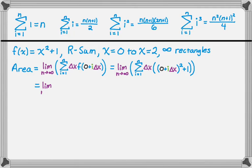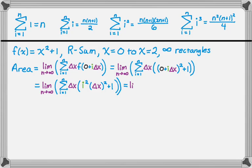Next step, I'm just going to expand a little bit. So the sum from 1 to n, delta x, and then if I square i delta x I get i squared delta x squared, plus 1 still. Next step, I'm going to distribute this delta x.